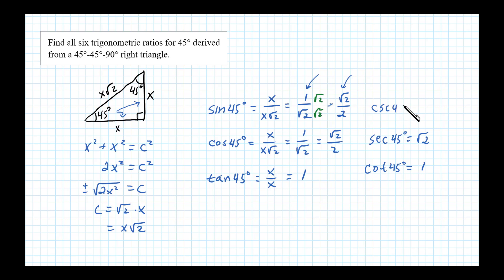The reciprocal of sine is cosecant, so cosecant of 45 is the reciprocal of 1 over square root of 2, and that also is square root of 2.